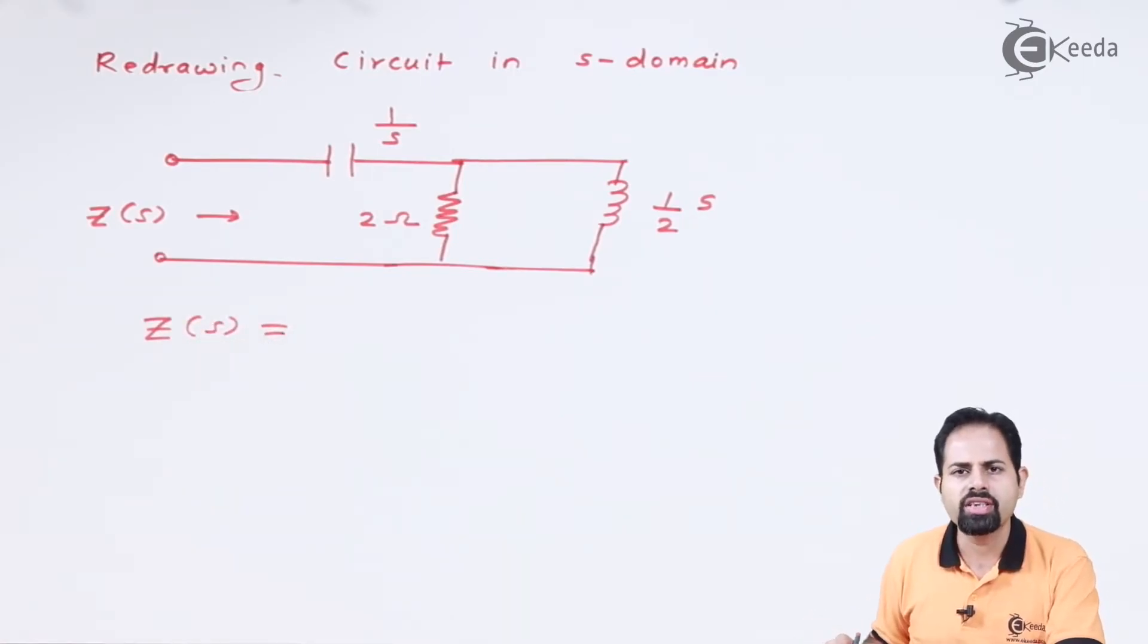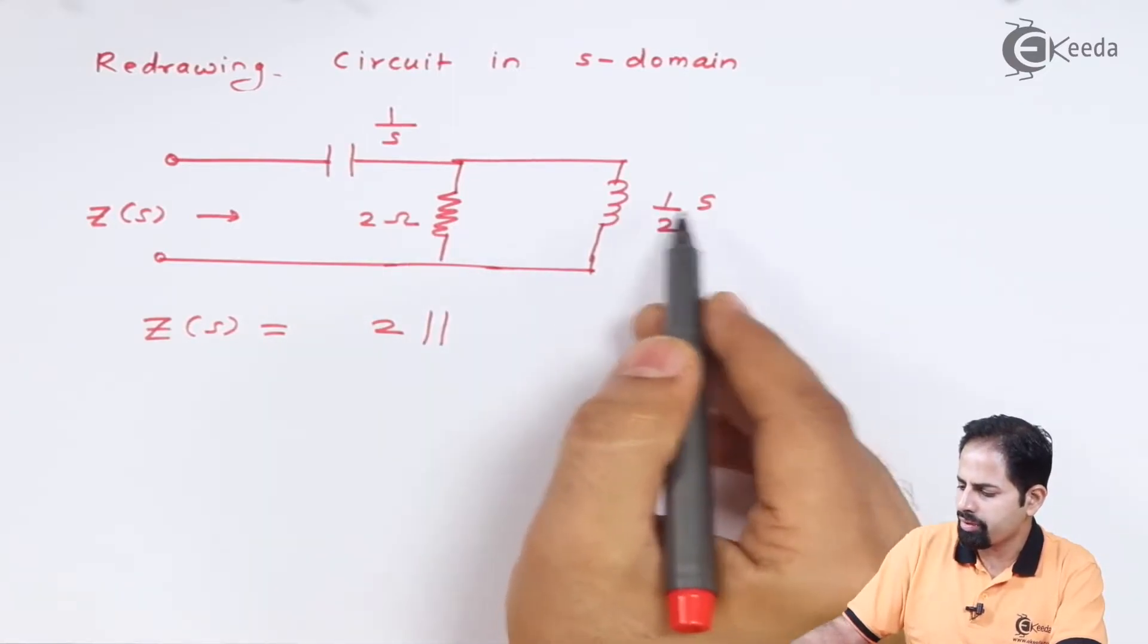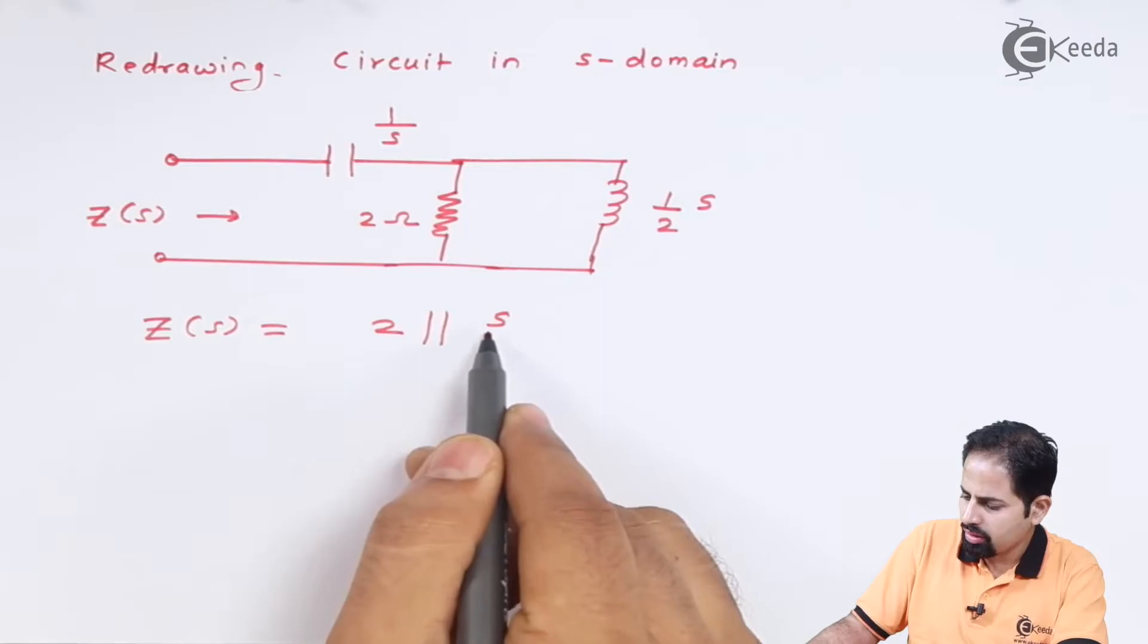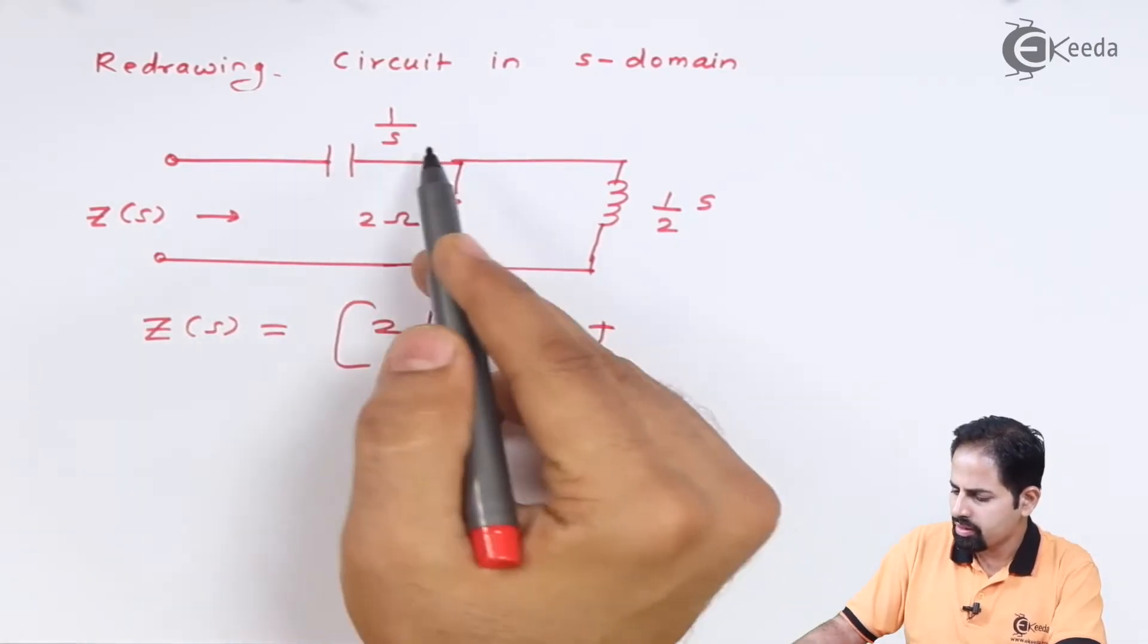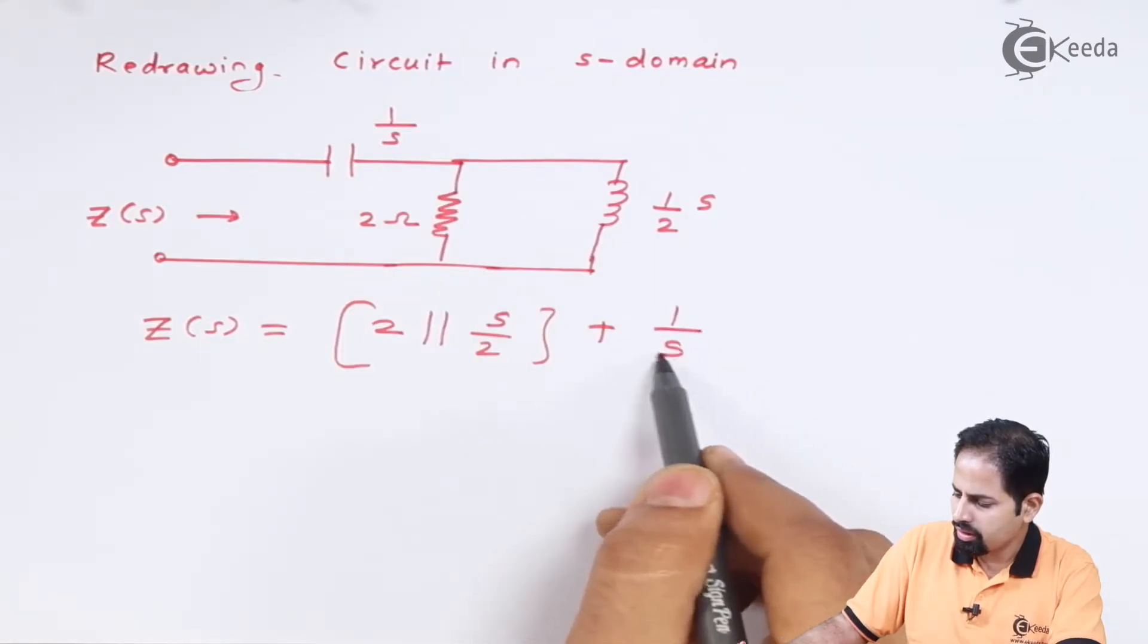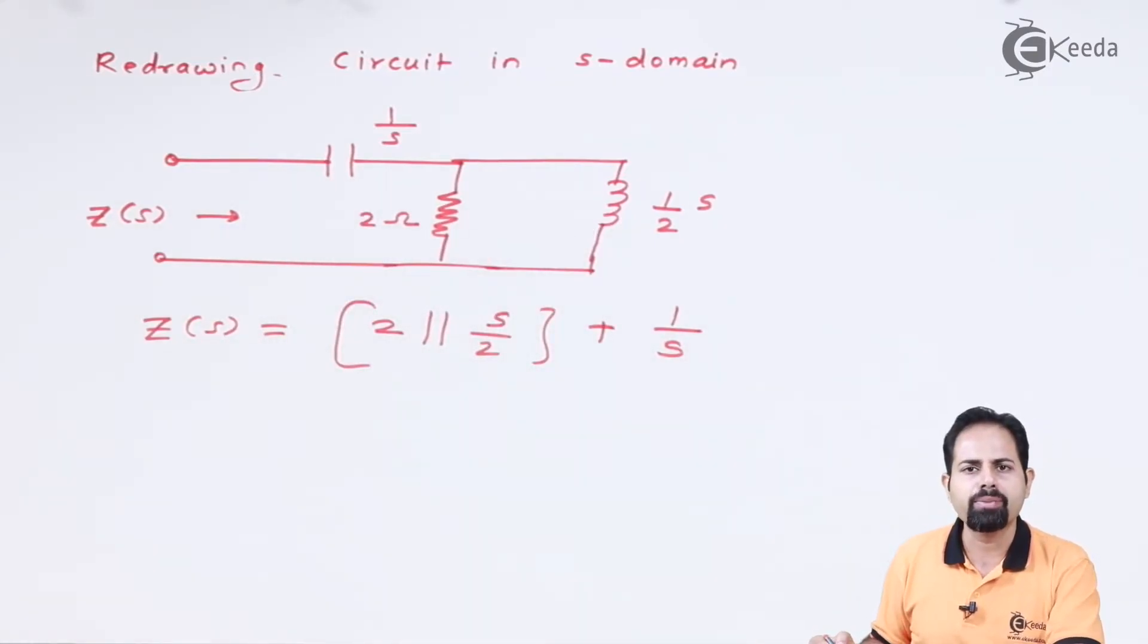So Z of S is equal to this two ohm resistance in parallel with this S by 2 impedance. That is to be added with this 1 by S impedance because we have replaced these capacitors and inductors with their respective impedances.